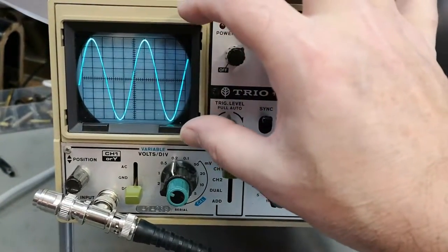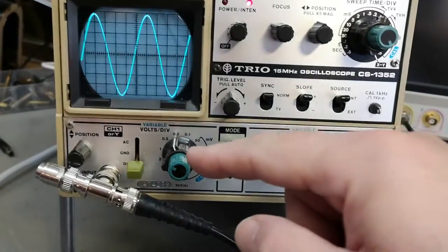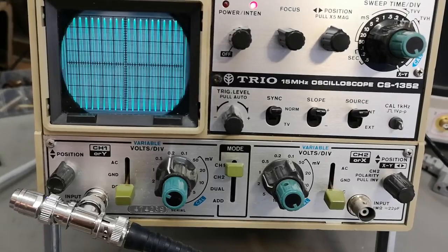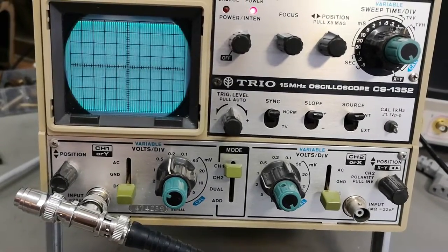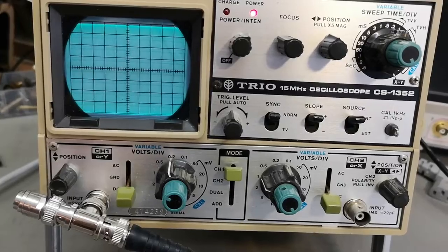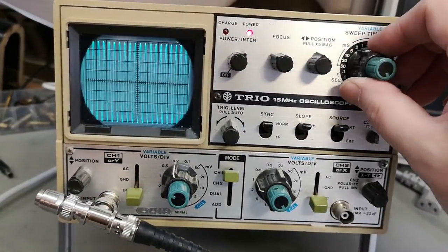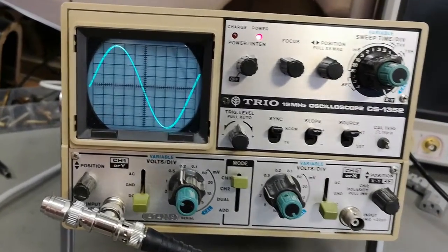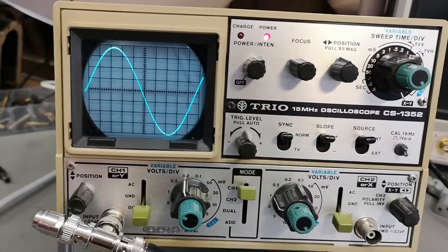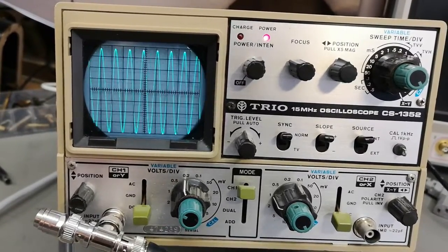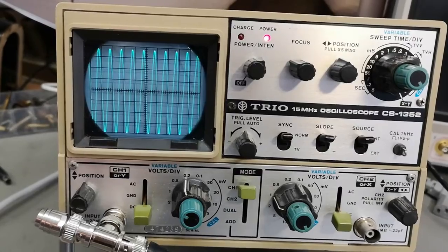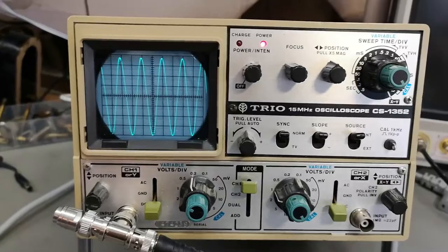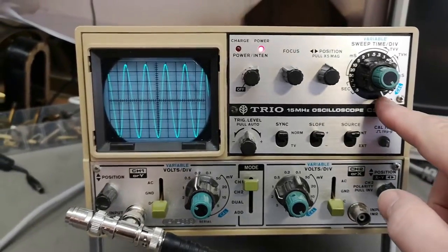Let's try and test the frequency range of this scope. They say 15 megahertz is the specification. This is one kilohertz, and I adjusted it for 100% using the variable. Let's crank up this speed. That was 10. Let's go to 100. That was easy, no attenuation, of course. Still a super beautiful picture here at 100 kilohertz.